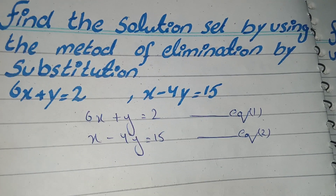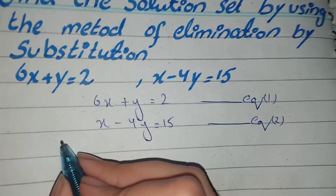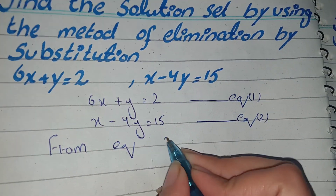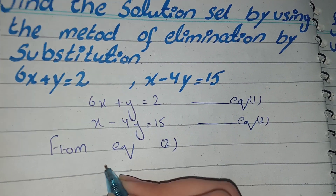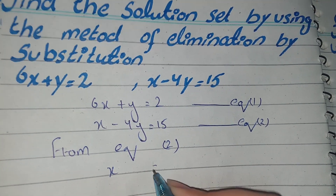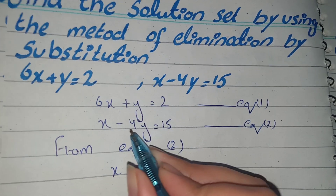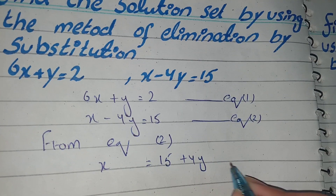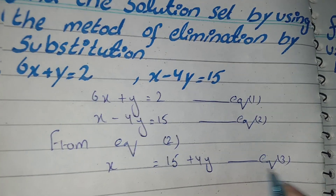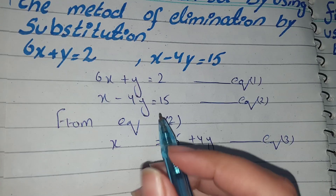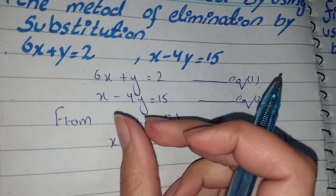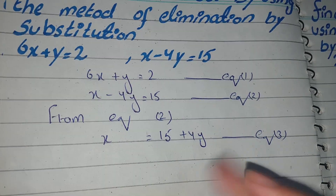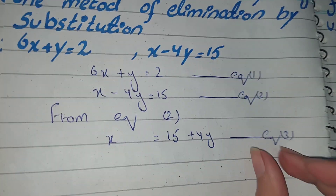From equation 2, we write x is equal to 15 plus 4y. This becomes equation 3. So from equation 2, we solve: x is equal to 15 plus 4y, and we call this equation 3.